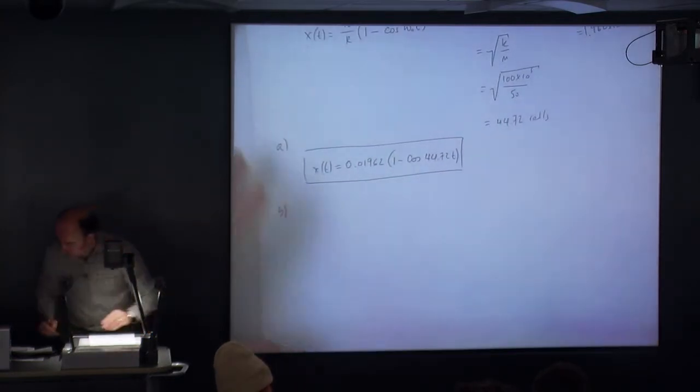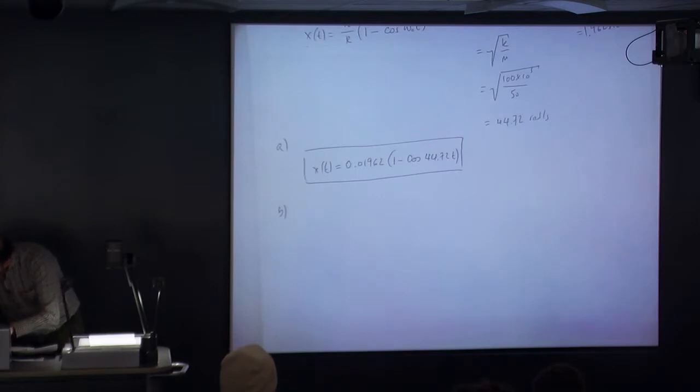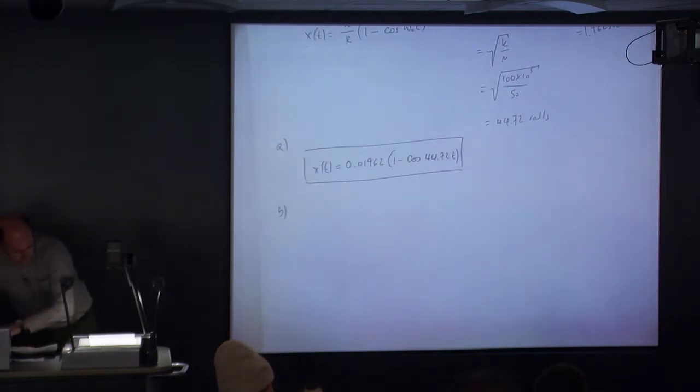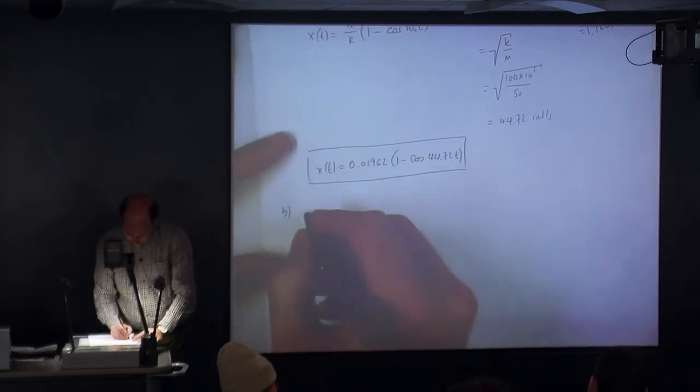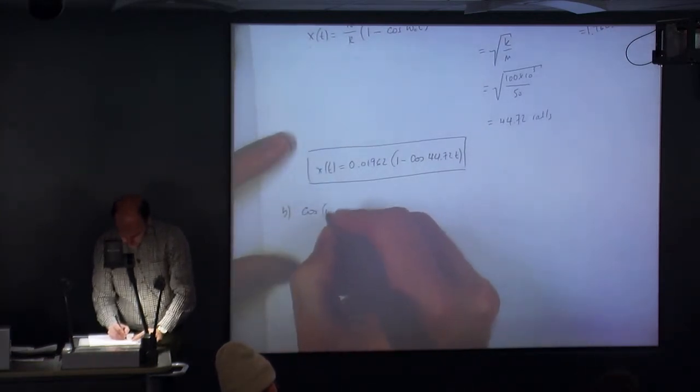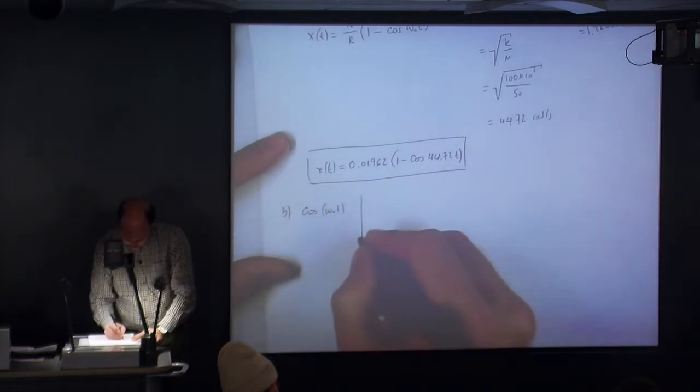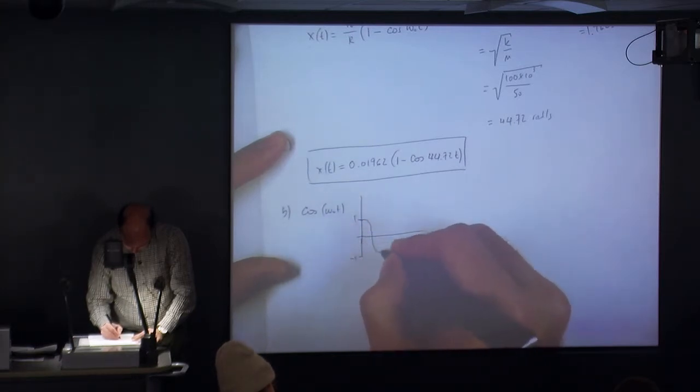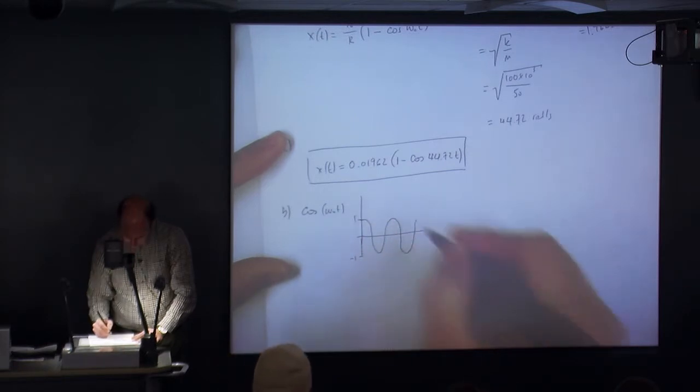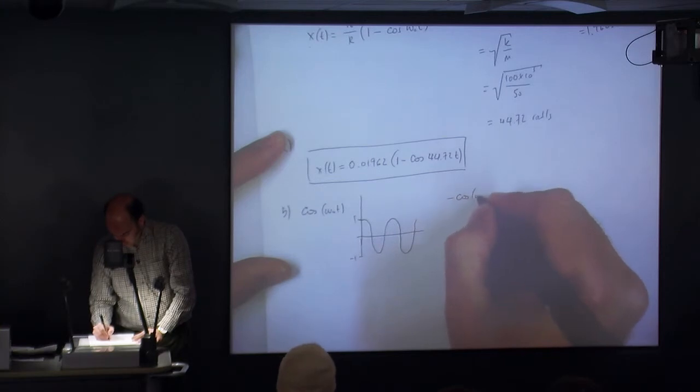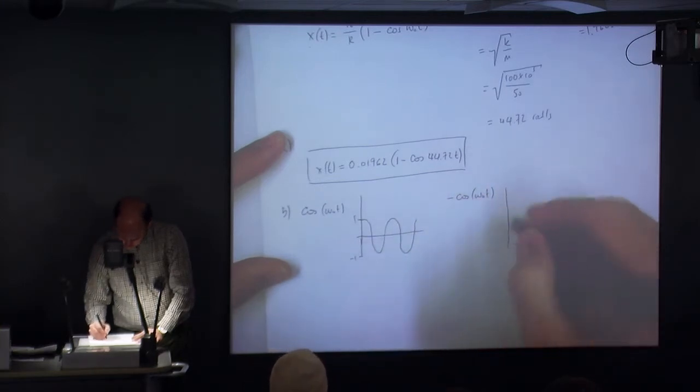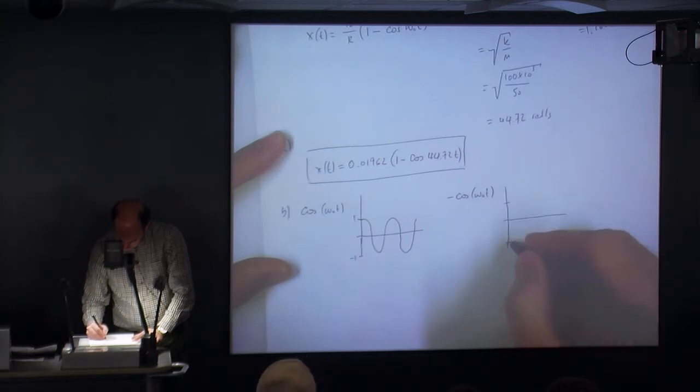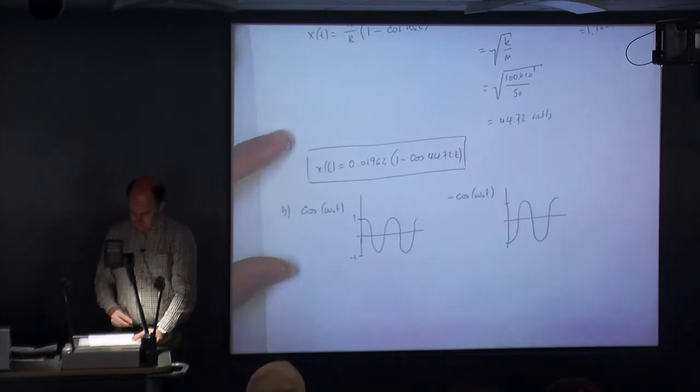Part b, the question says, plot your answer. Plot x against time. Well, if I was going to plot cosine omega naught t, that would look like this. Minus cosine omega naught t is obviously upside down version of that. So let's start down here. Do you agree?